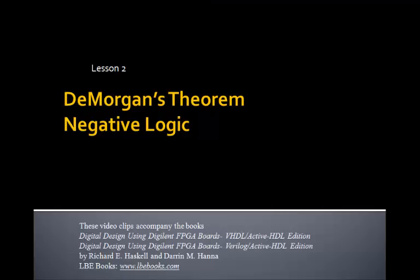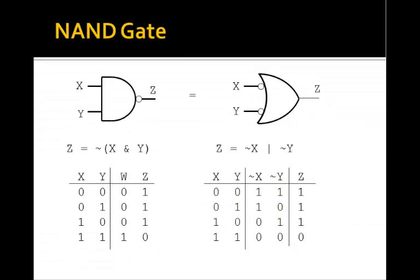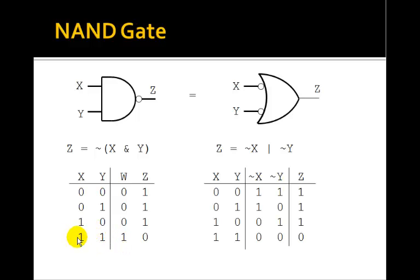This is Lesson 2 on De Morgan's Theorem in Negative Logic. You remember from Lesson 1 that this is the symbol for a NAND gate — an AND gate with a bubble on the output. This was the truth table: the output of a NAND gate is 0 only when both inputs are 1, and we write the logic equation as Z equals NOT (X AND Y).